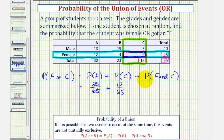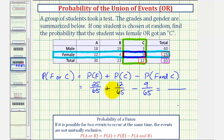The probability of a student being female and receiving a C would be equal to 9 divided by 65. So the probability of one student being selected and being female or receiving a C would be equal to 25/65 plus 12/65 minus 9/65.